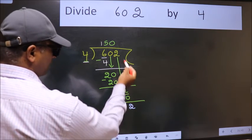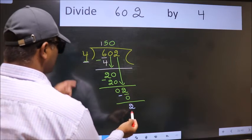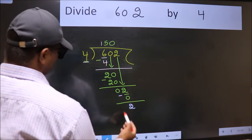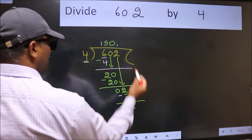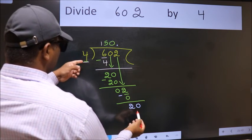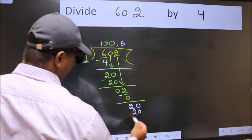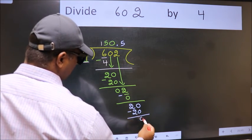Over here, we did not bring any number down, and 2 is smaller than 4. So now we can put dot and take 0. So 20. When do we get 20 in the 4 table? 4 times 5 is 20. Now we subtract. We get 0.